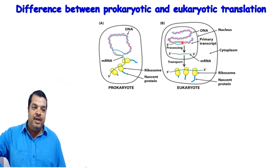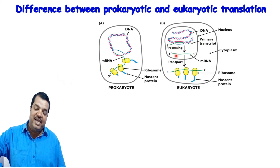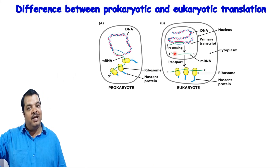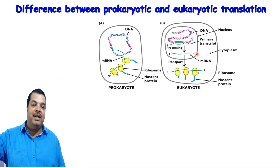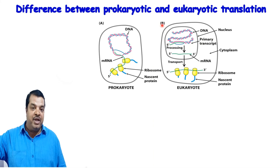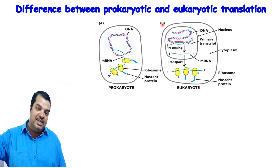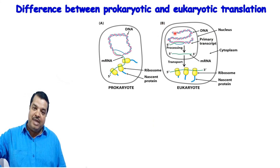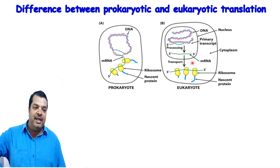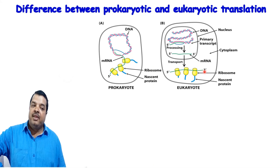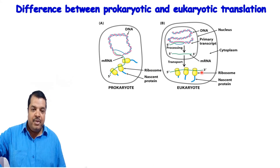In eukaryotes, RNA is first made in the nucleus, then processing occurs — including 5' capping, 3' polyadenylation, and intron splicing. After transcriptional processing, the mature mRNA moves to the cytosol, where it meets ribosomes and protein synthesis takes place. This is the first major difference explained.